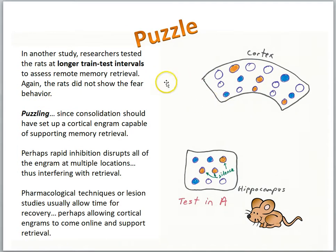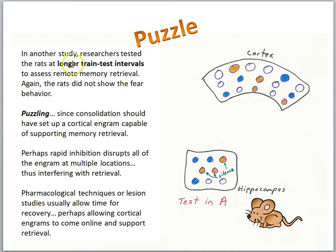But we have a puzzle. In another study, researchers tested rats at longer train-test intervals to assess remote memory retrieval, and again the rats did not show the fear behavior. This is puzzling because consolidation should have set up a cortical engram capable of supporting memory retrieval. The idea of consolidation was to transform the memory so it becomes hippocampal independent. But they found impaired memory when silencing hippocampal cells even at longer intervals.